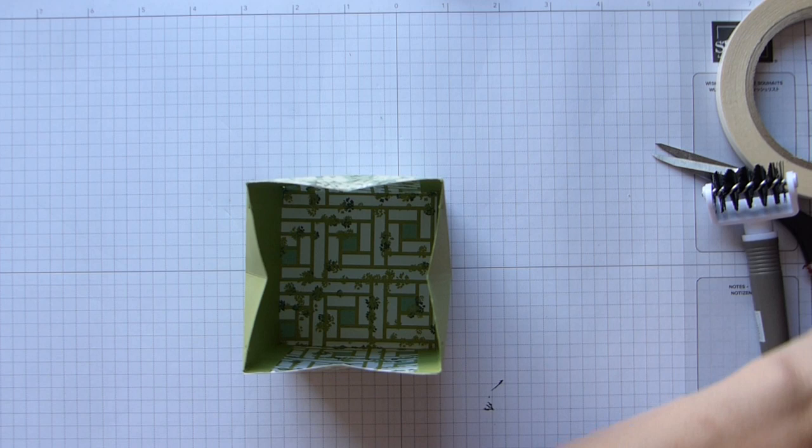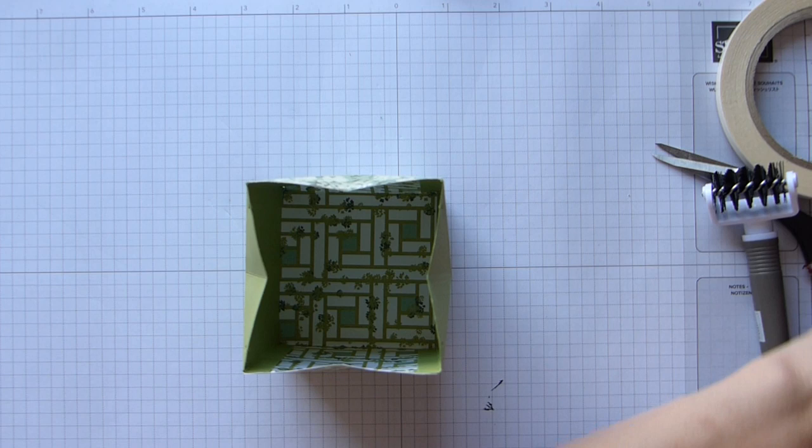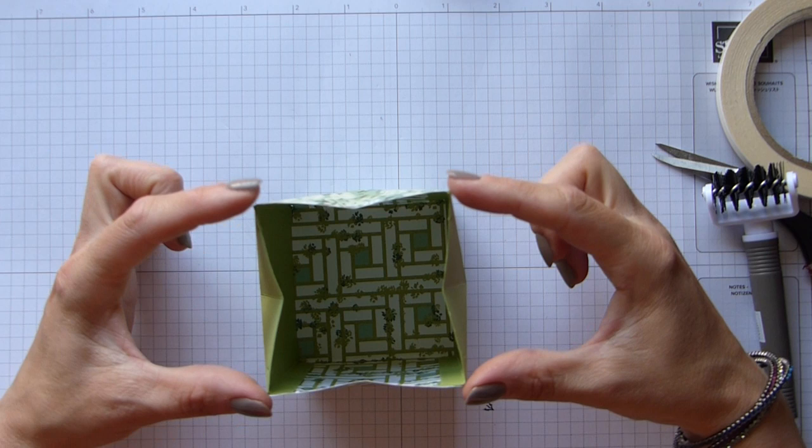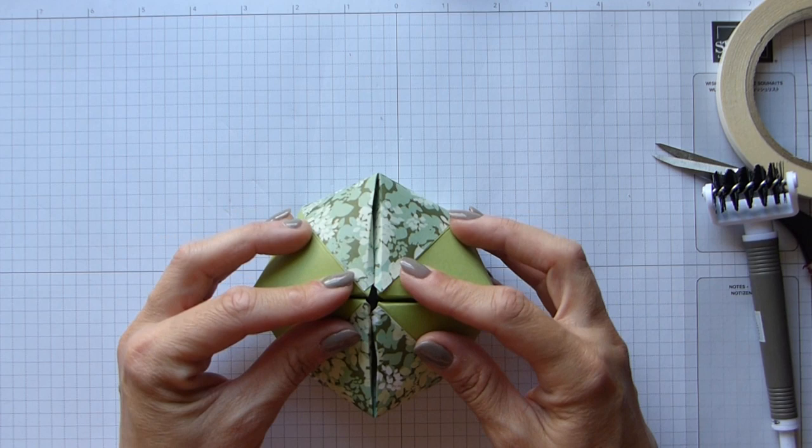You can now see that your dome box is already taking shape. What you need to do is push your four corners in. That's how you create that dome top.